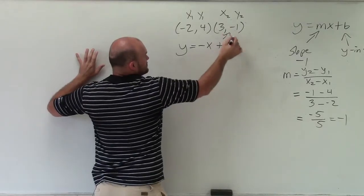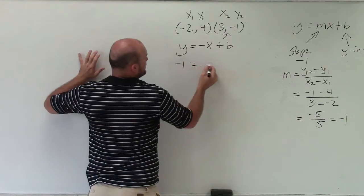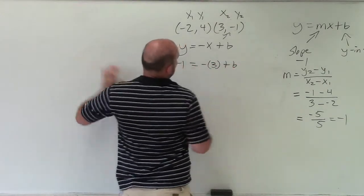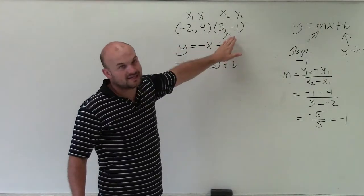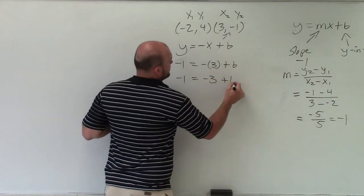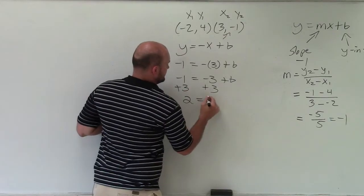I will choose this one. You could choose this one if you like. Negative 1 equals negative 3 plus b. Notice how I put parentheses around that. That's a negative x, and x is equal to 3. So I have negative 1 equals negative 3 plus b. Add 3 to both sides, 2 equals b.